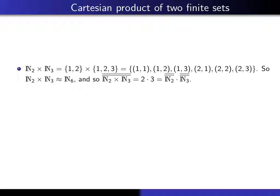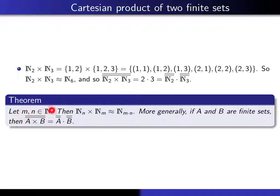That's one reason product notation is used for Cartesian products — because the cardinalities multiply. In general, if m and n are any natural numbers, the Cartesian product Nₙ × Nₘ has the same cardinality as N_{m·n}; both have cardinality m times n. More generally, if A and B are any finite sets, the cardinality of their Cartesian product equals |A| times |B|. We'll later compare this to the infinite case, where this theorem fails dramatically.